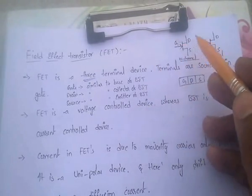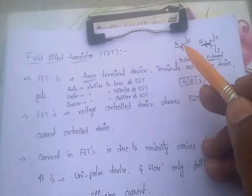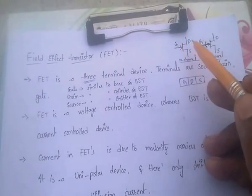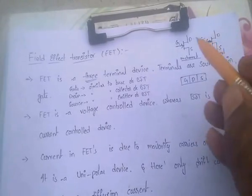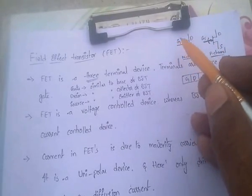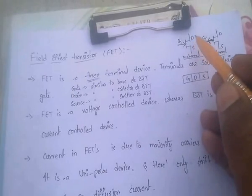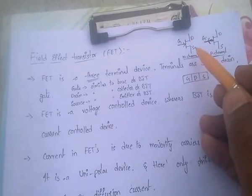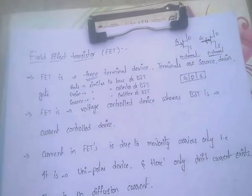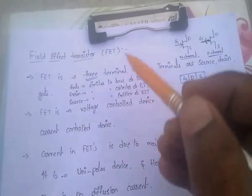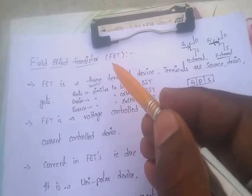FET is a 3-terminal device. The terminals are Gate, Drain, and Source. The Gate is similar to the Base of BJT, Drain is similar to the Collector of BJT, and Source is similar to the Emitter of BJT.